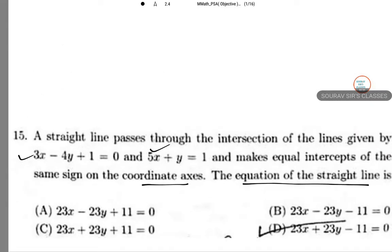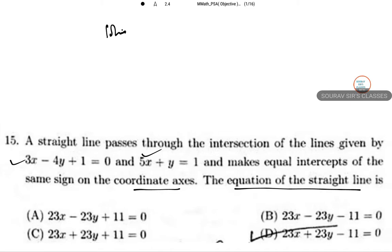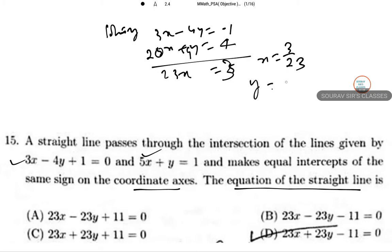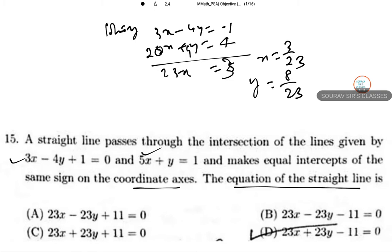So just solving the given two equations: 3x minus 4y equals minus 1, and 5x plus y equals plus 1. Solving these, we get 3x equals... wait, my mistake. So x equals 3 by 23, and y equals 8 by 23.